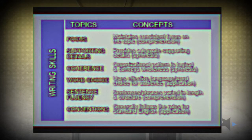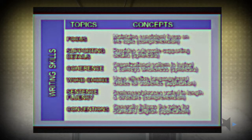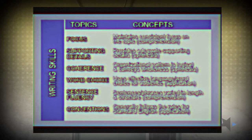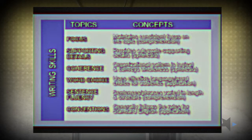So you might have, for example, under coherence: is the organizational pattern of the student's writing logical and does it convey wholeness? This would be an example of having a concept at the synthesis level. Word choice — do they use effective language and appropriate word choice for the audience? So it could certainly be at the evaluation level where they're having to make decisions, and on it goes.